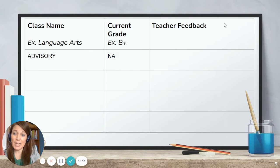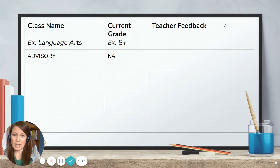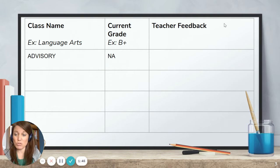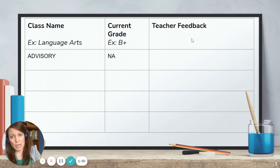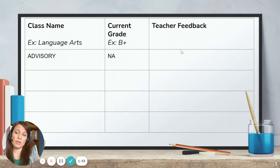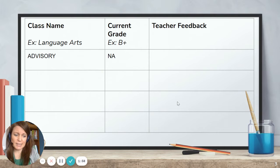On the next slides, you are going to go ahead and enter in each of your classes, your current grade, and the feedback that your teacher has directed you to include in this conference reflection. In advisory, you don't have a grade, but your advisory teachers will be adding a piece of feedback. Then here you can add your next class.